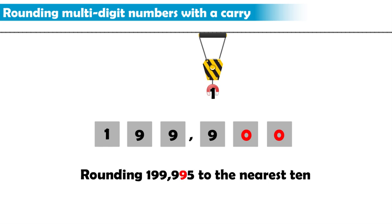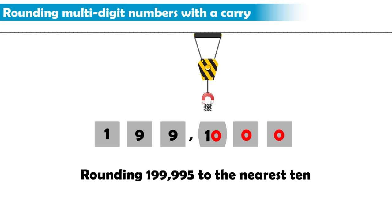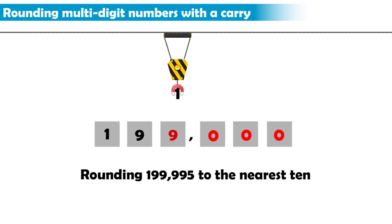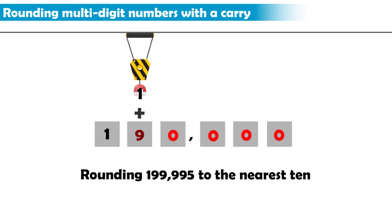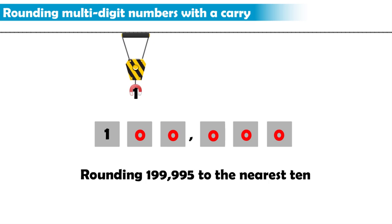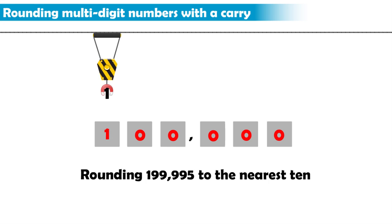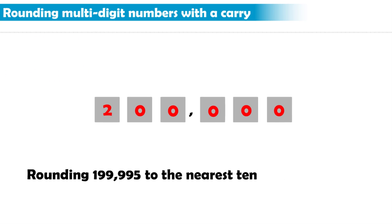But the digit to the left of the 9 is also a 9, so it becomes a 10. Then it takes the 0, and the 1 is carried to the digit to its left. The same thing continues for the rest of the nines in the number, making them 0, until we reach the digit 1. Then we add the carry 1 to it, making it a 2, and we are done. So the number rounded to 200,000.